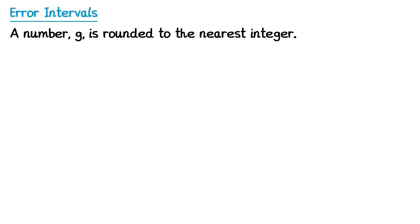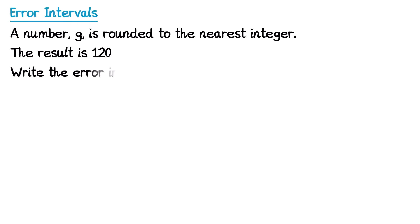In this question we have a number G that's been rounded to the nearest integer, and the result is 120, and we need to write the error interval for G. For this one it's the nearest integer, which means the nearest whole number. So we draw a number line and place 120 in the middle, going the whole number below and the whole number above: 119 and 121. A really common mistake here is some people may go for 115 and 125 — but that would be the case if it said the nearest 10 rather than the nearest integer.